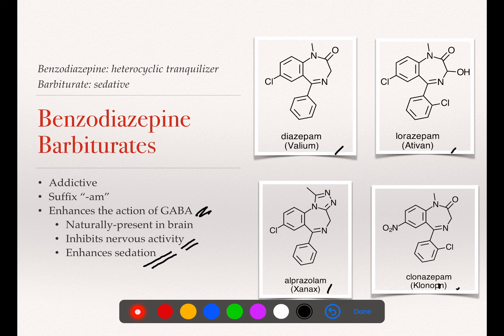Those are the trademarked names. If you look at the generic names, you'll see they all sound similar: diazepam, lorazepam, alprazolam, clonazepam. Those are all the interesting alkaloids we're going to talk about in sections 18.4 and 18.5.